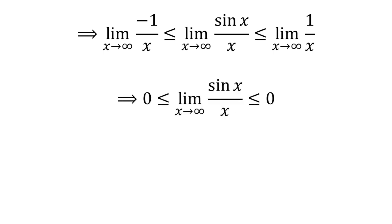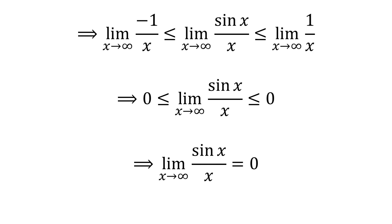We know as x approaches infinity, minus 1 upon x and 1 upon x both approach 0. So the above statement implies the limit of sin(x) upon x as x approaches infinity is equal to 0.